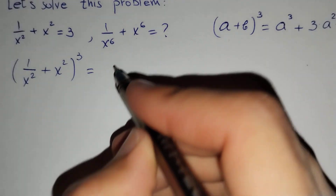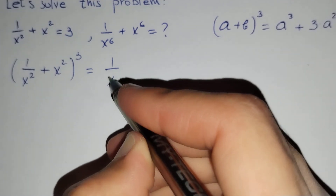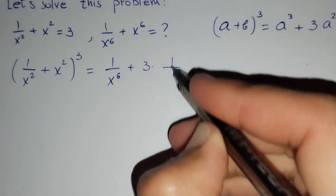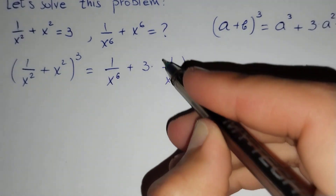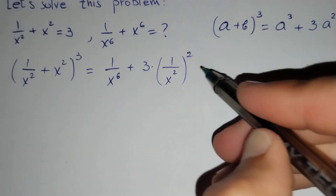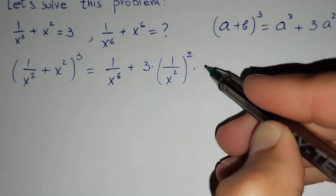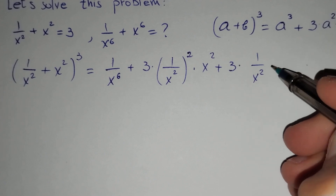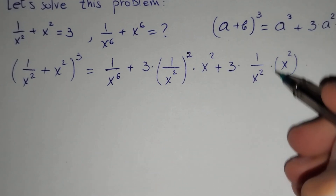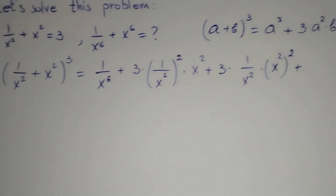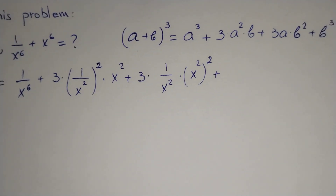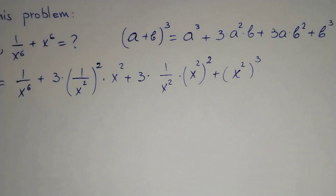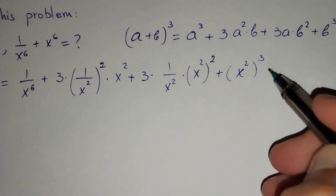Then this is equal to 1 over x to the power 6, plus 3 times (1 over x squared) squared times x squared, plus 3 times 1 over x squared times (x squared) squared, plus x squared cubed. And now simplify this.